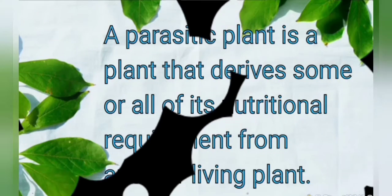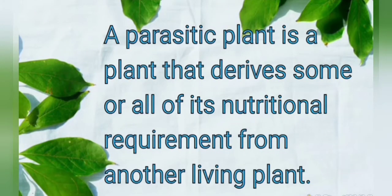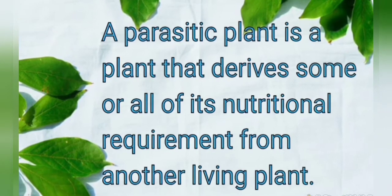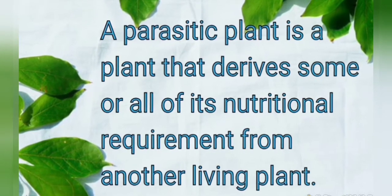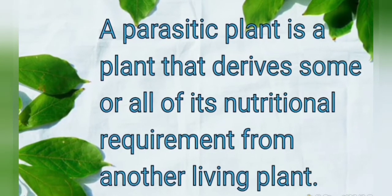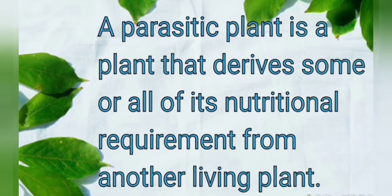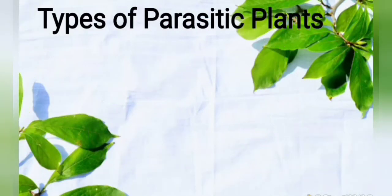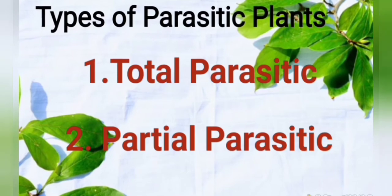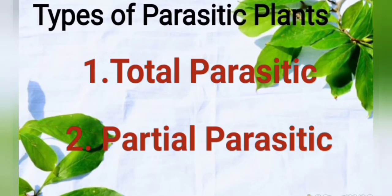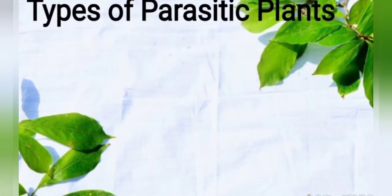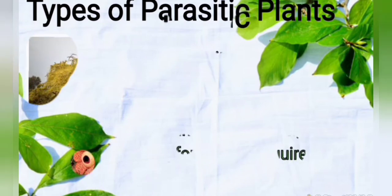A parasitic plant is a plant that derives some or all of its nutritional requirements from another living plant. There are two classifications of parasitic plants: one is total parasitic plants and another is partial parasitic plants.